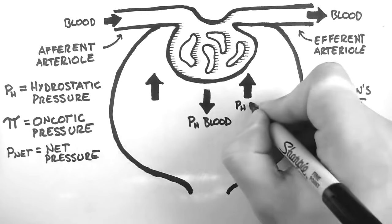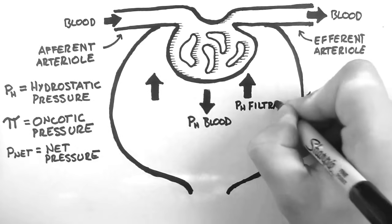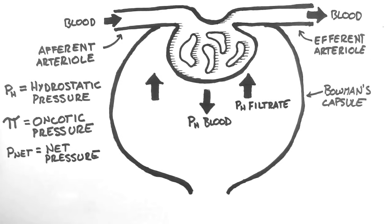The second is the hydrostatic pressure of the filtrate, and this pressure compels fluid to move back into the capillaries. This can be a bit confusing, so I'll explain a bit further. Any fluid that is contained within a space exerts hydrostatic pressure on the boundaries of that space. So when the blood is filtered and the filtrate collects within the Bowman's capsule, the filtrate exerts pressure on the boundaries of the Bowman's capsule and the capillary bed within the capsule.